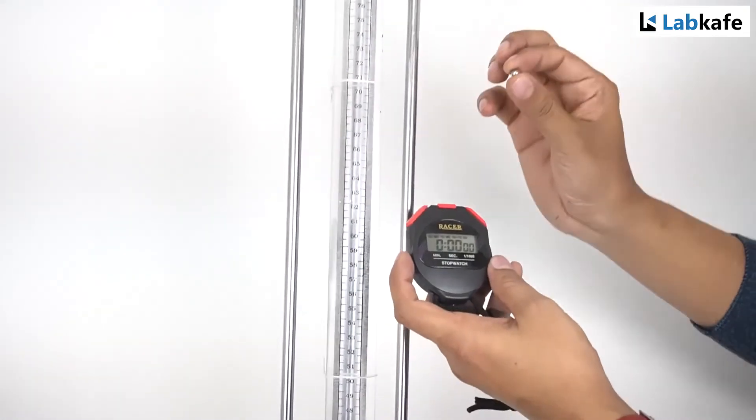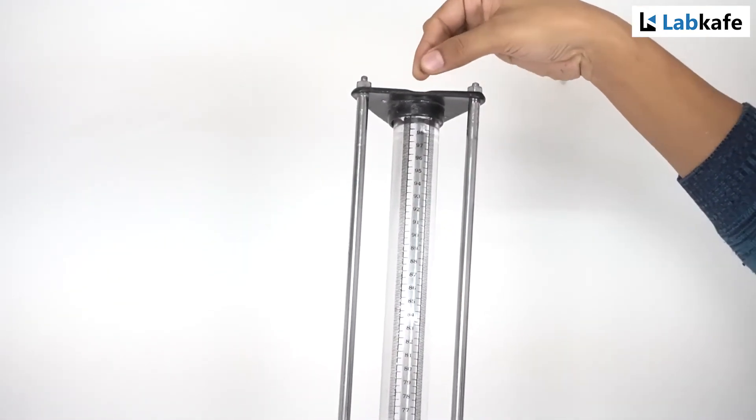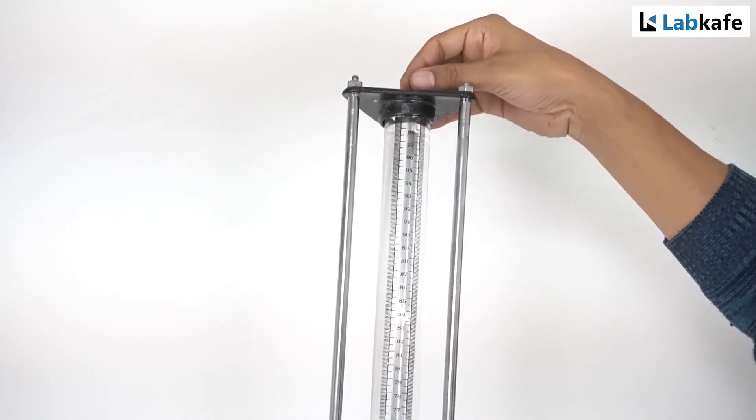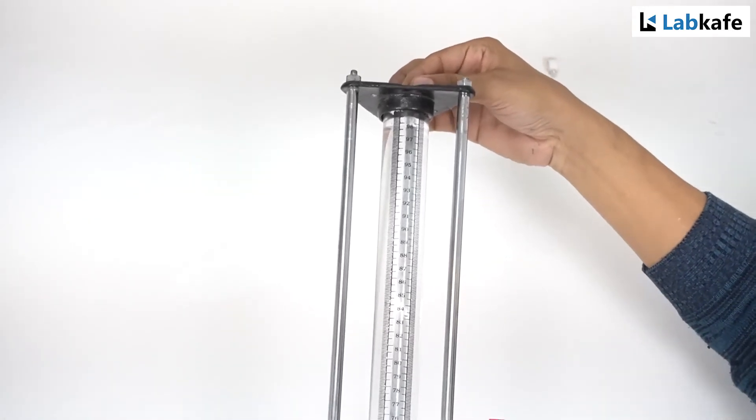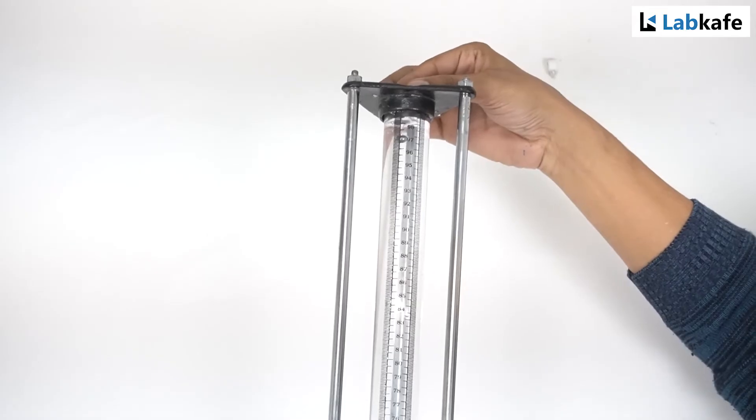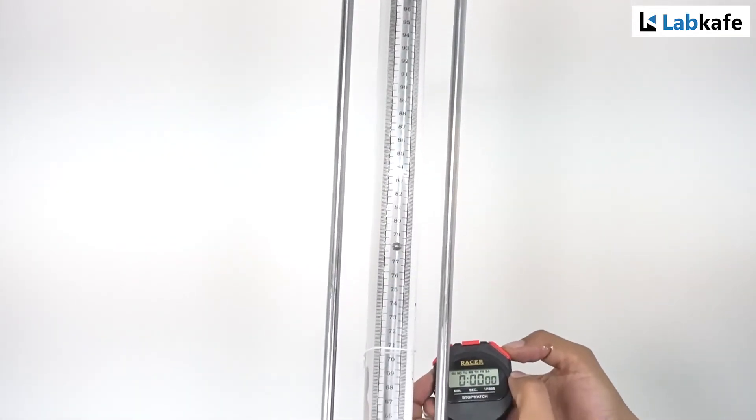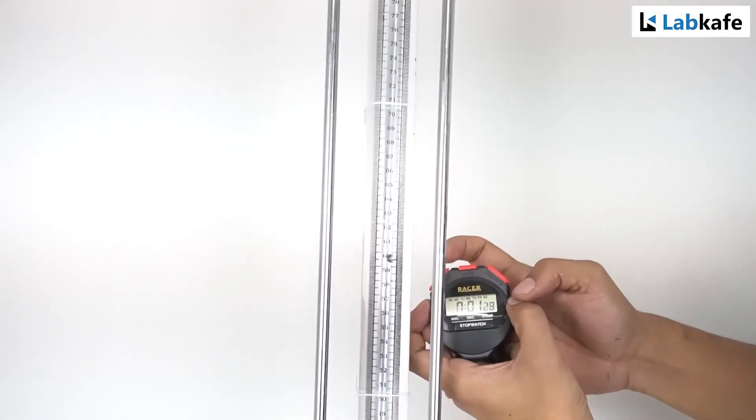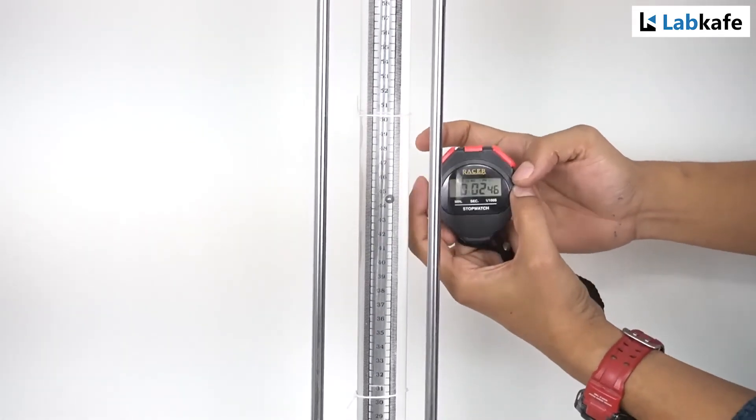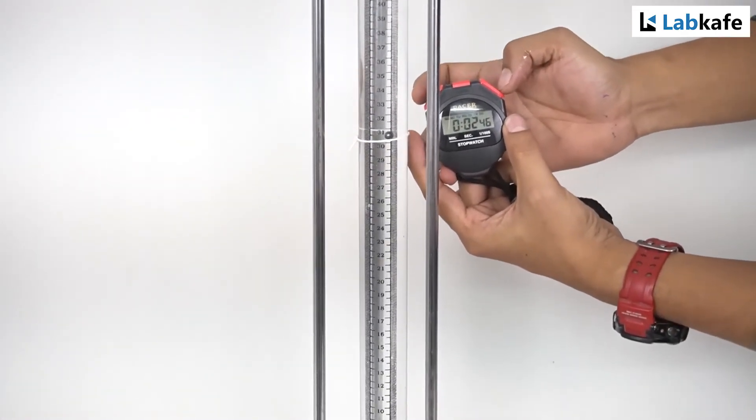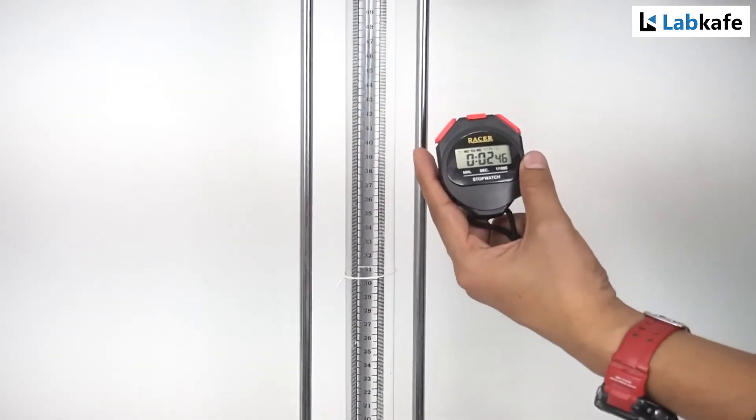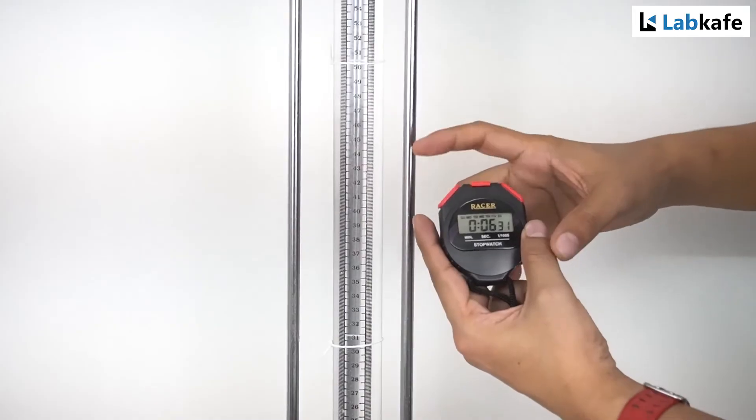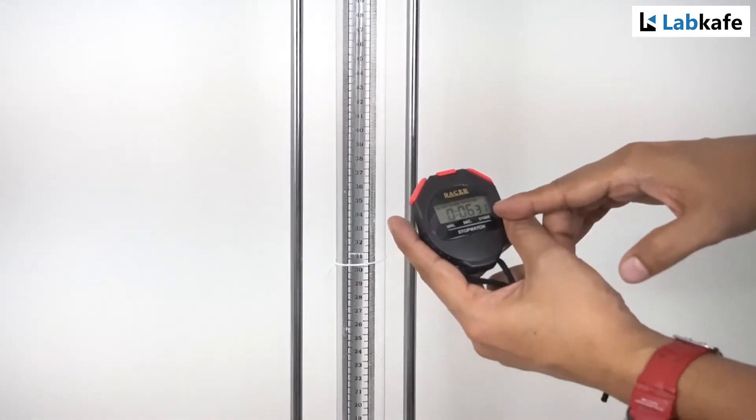Now I will take the second ball and drop it at the center of the diameter of the tube, right at the middle. Start, split, stop. So it's 2.46 for this one. From this point to this point it is 2.65, and the total time is 6.31.